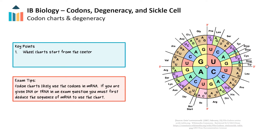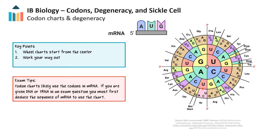This first chart here uses a wheel layout to determine the amino acid designated by a particular codon. You begin from the middle and work your way out. So if we had the codon AUG, we could determine which amino acid it codes for. We start with A in the middle, find the section in the next ring that codes for U, then find the subsection in the last ring that codes for G. Here we can see that the codon AUG codes for the amino acid met, the shortened name for methionine.